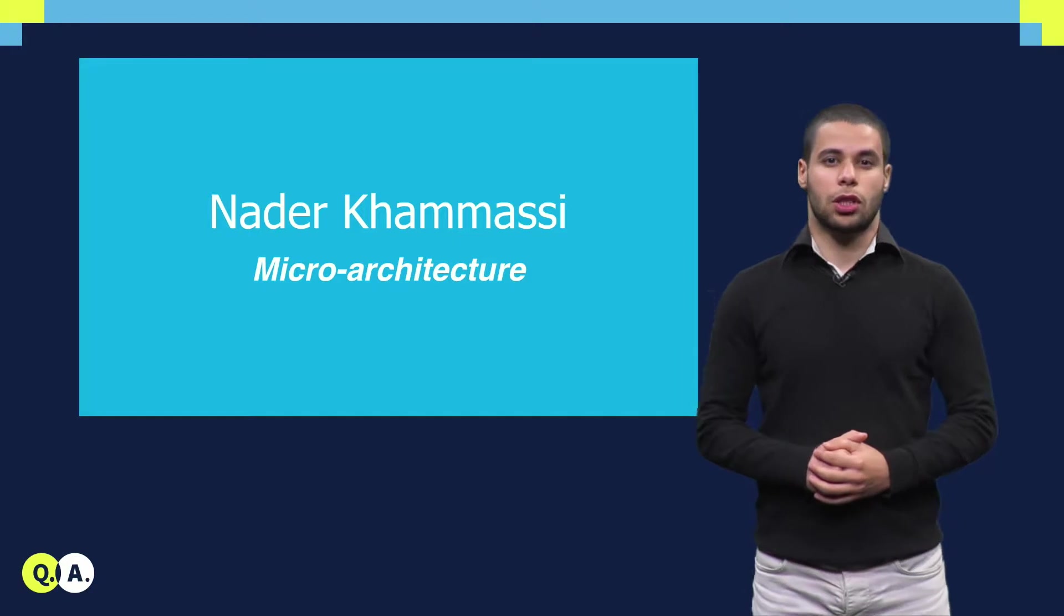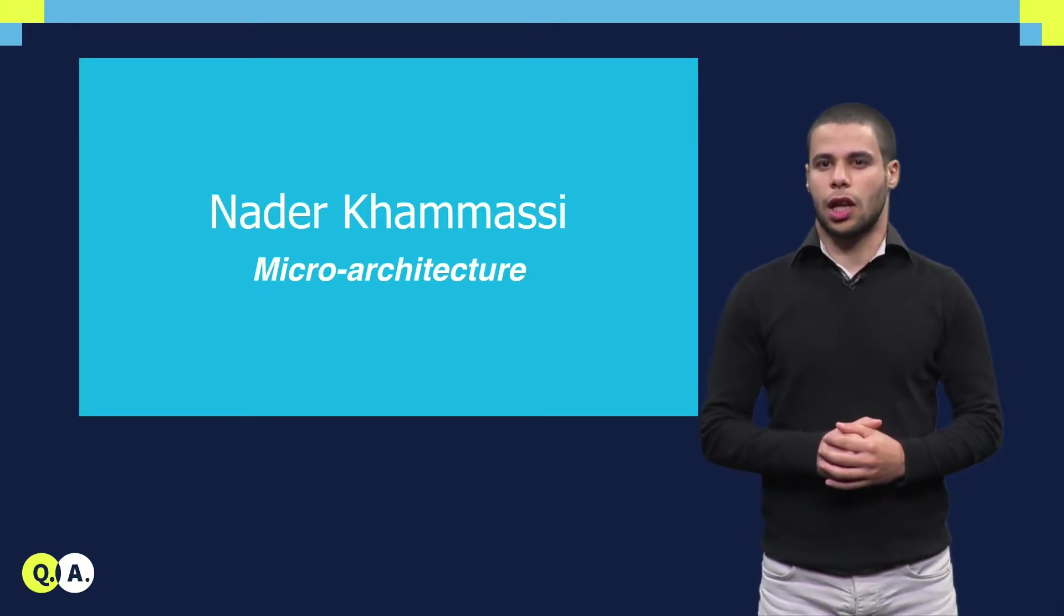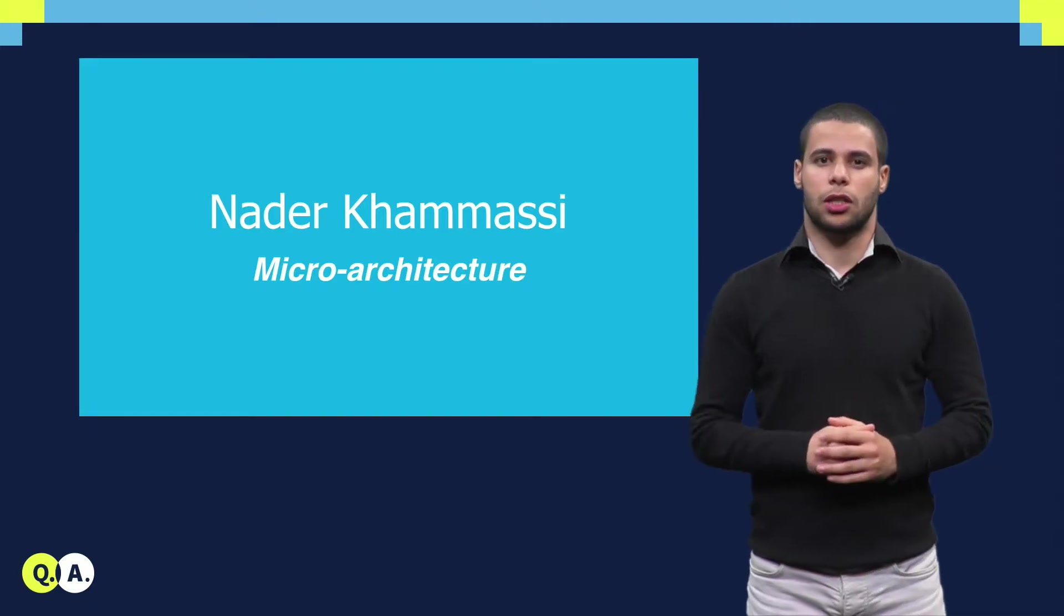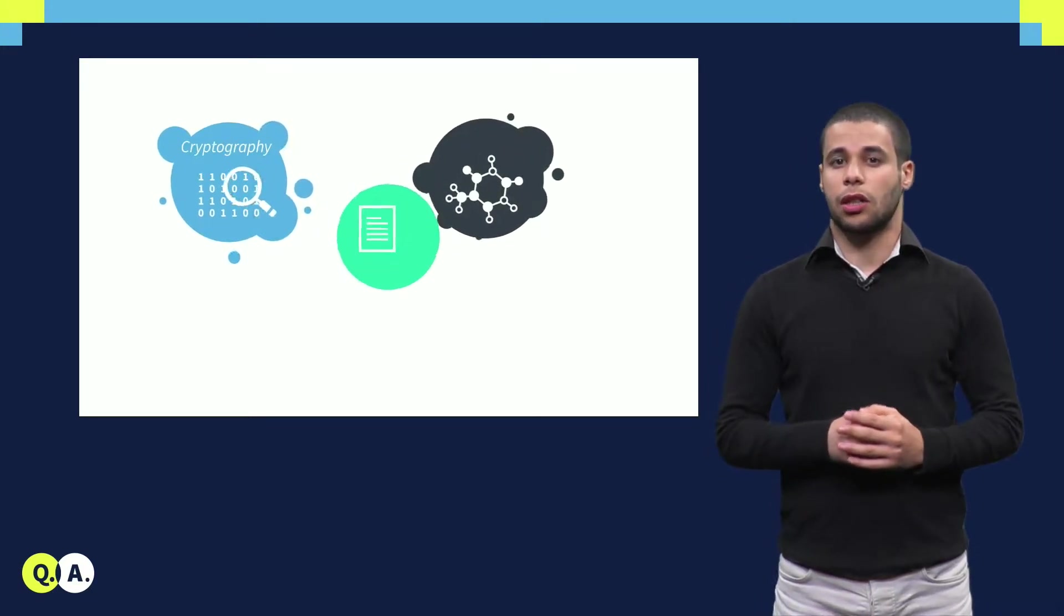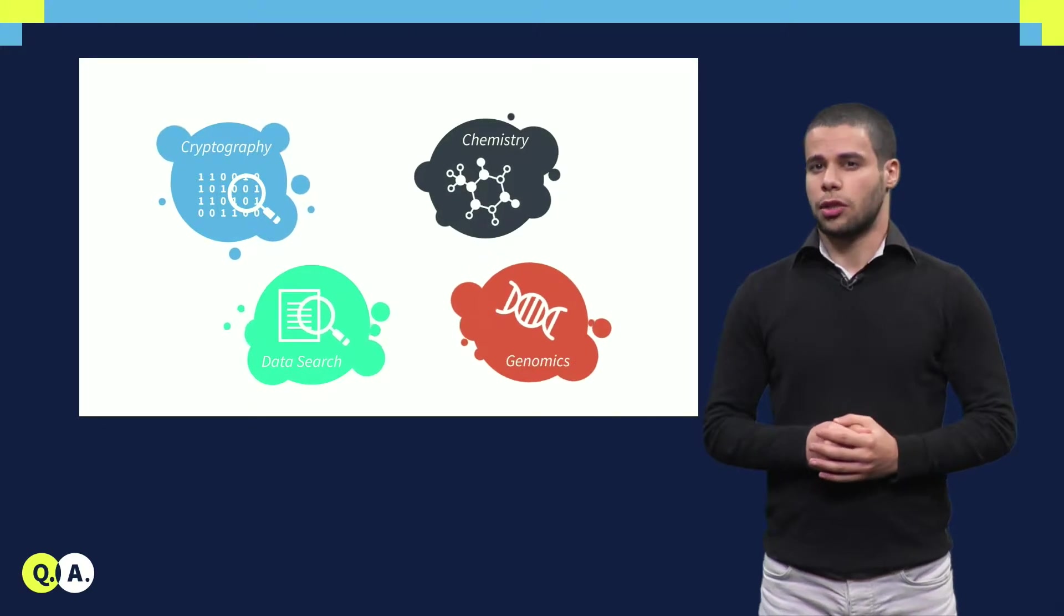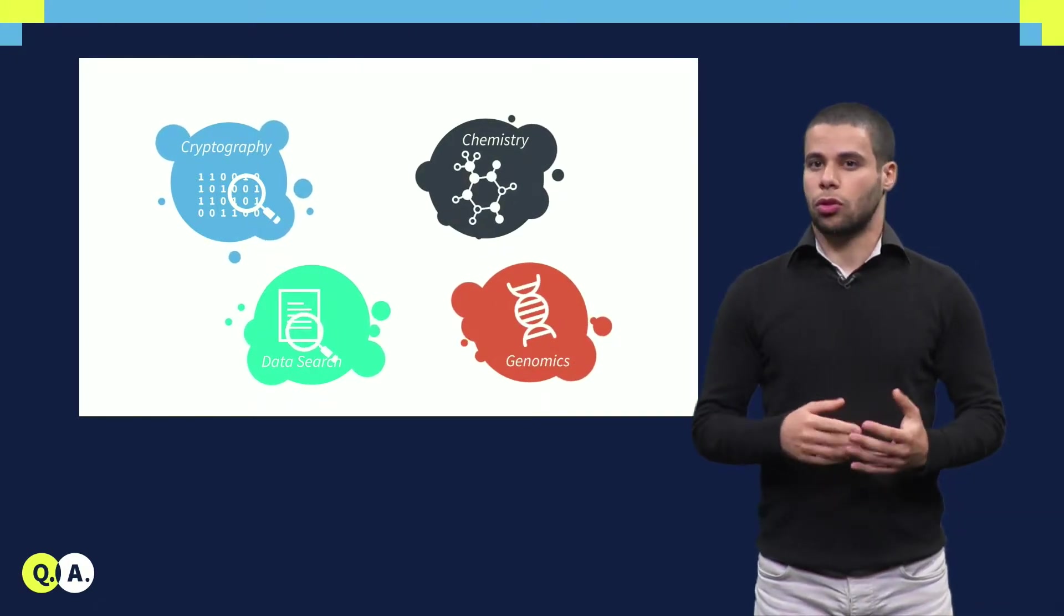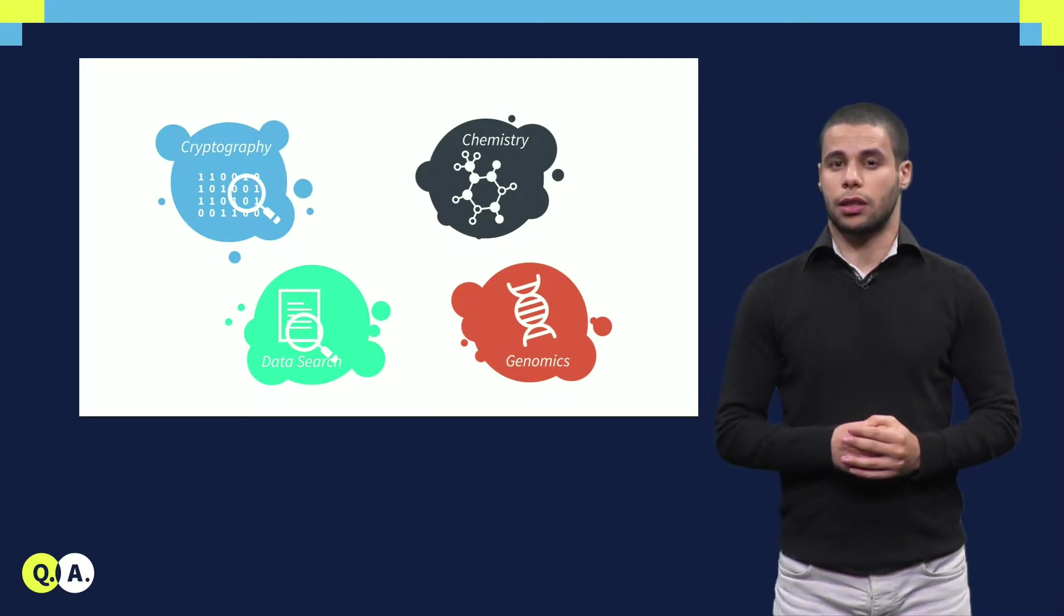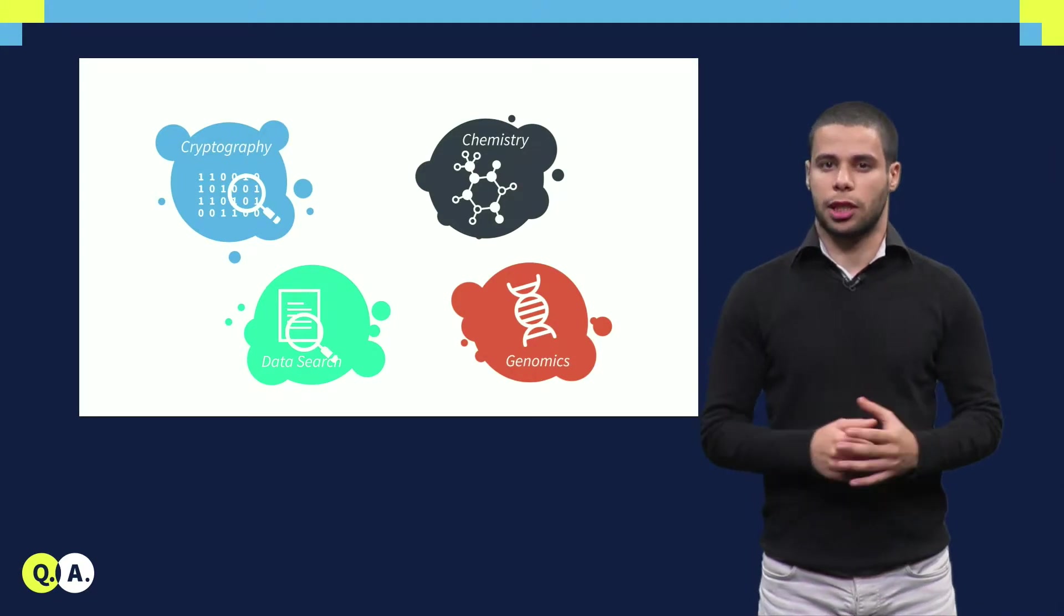In the previous lecture, we saw that quantum computing can speed up significantly several algorithms from different application domains. Among those applications, for instance, in cryptography Shor's algorithm can accelerate prime number factoring, in chemistry we can speed up molecule simulation, we can use the Grover algorithm for fast data search, and we can also accelerate pattern matching in genomics.